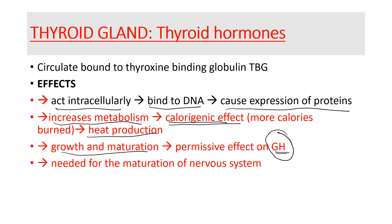Growth hormones have an effect on the growth and maturation of an individual. Thyroid hormones are also needed for the proper development of the nervous system. Children or babies that are not producing enough thyroid hormones will suffer from a form of mental retardation called cretinism.